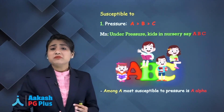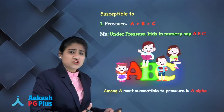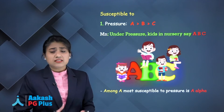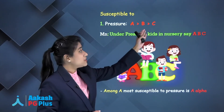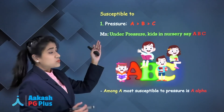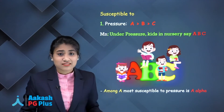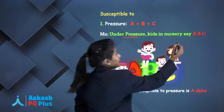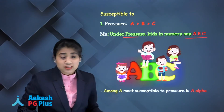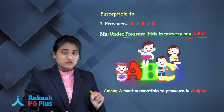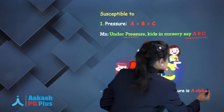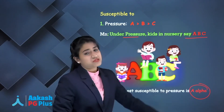Now let's look at susceptibility of fibers to pressure, hypoxia, and local anesthetic. For pressure, the order is A > B > C — A fibers are most susceptible and C fibers are least susceptible. Mnemonic: 'Under pressure, kids in nursery say A, B, C.' Among A fibers, A-alpha is the most susceptible to pressure.